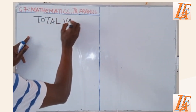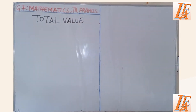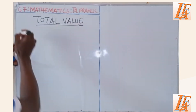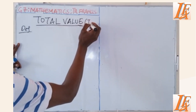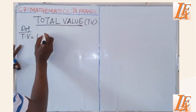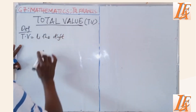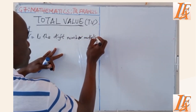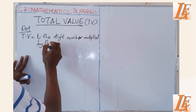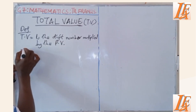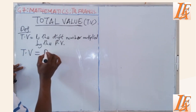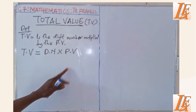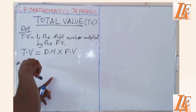Total value. We said in our previous lesson that for us to find total value, we must find place value. Therefore, we cannot define total value — abbreviated as TV — as: total value is the digit number multiplied by the place value. So this means, when we find total value, total value is equal to digit number (abbreviated as DN) times the place value.